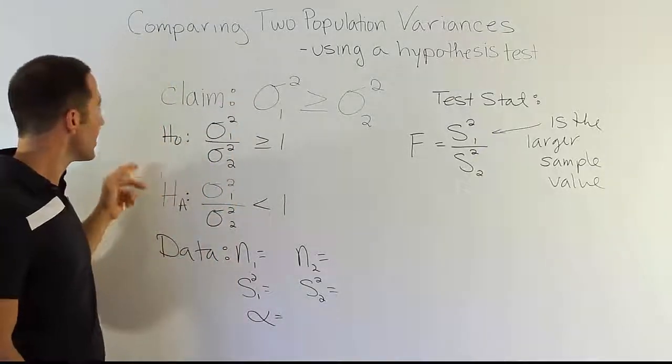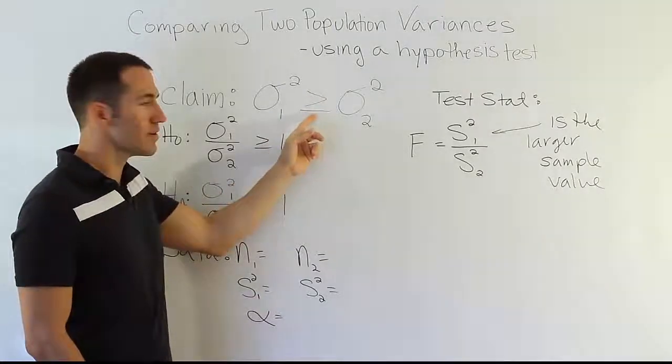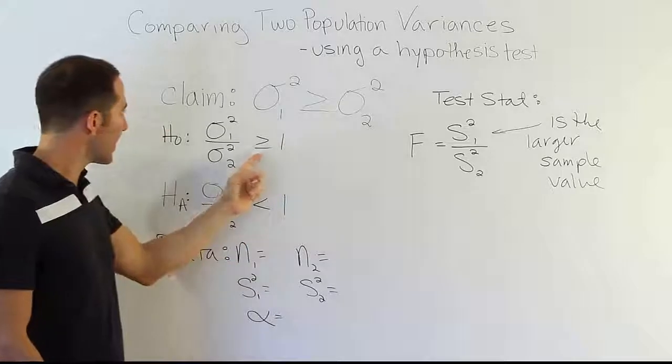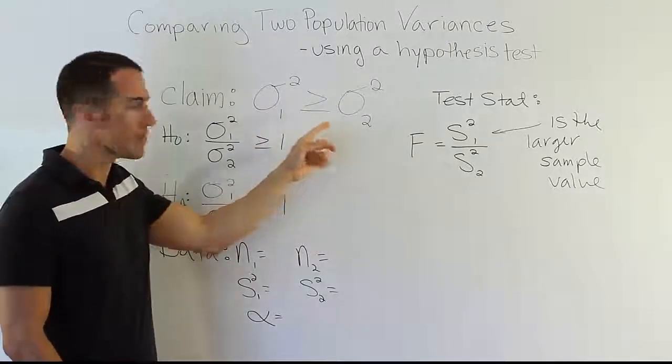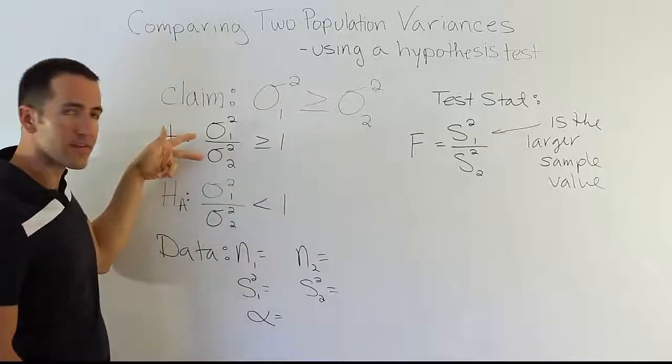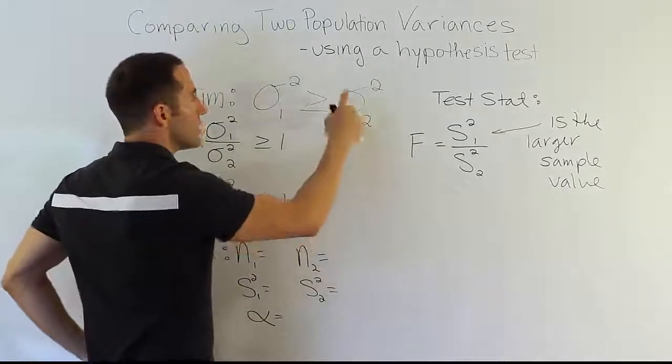Either way, that's why we would want to do this procedure. From here, how we get H₀ and Hₐ is pretty much the same as we've always done. You notice that this has greater than or equal to in it, so I've made that my H₀. But you might say, well, wait a second, there was no 1 up here. How did this 1 get here? And why is this a fraction?